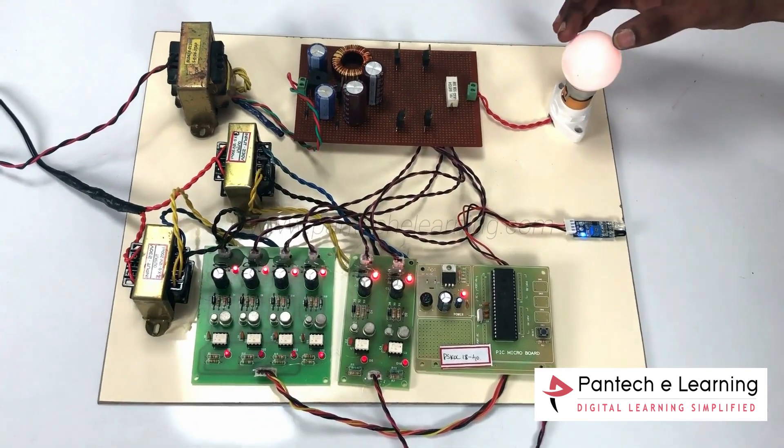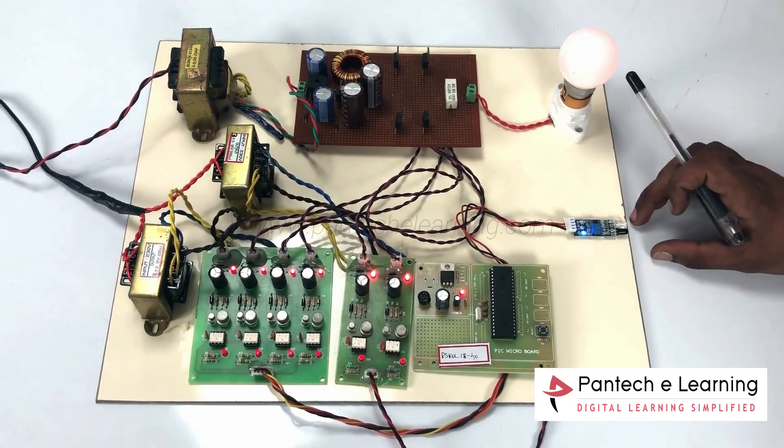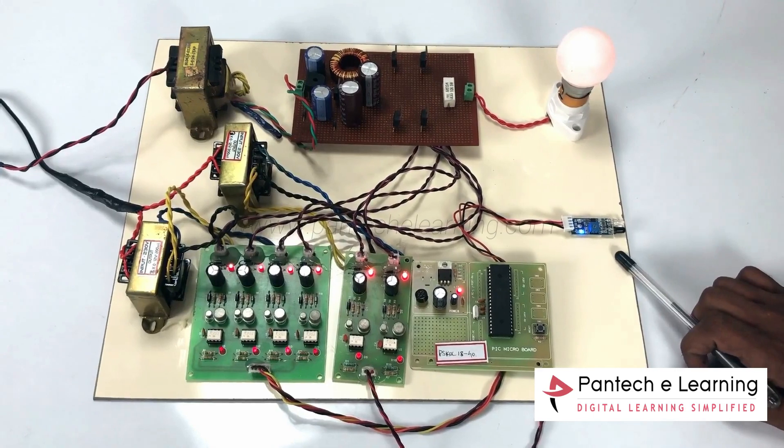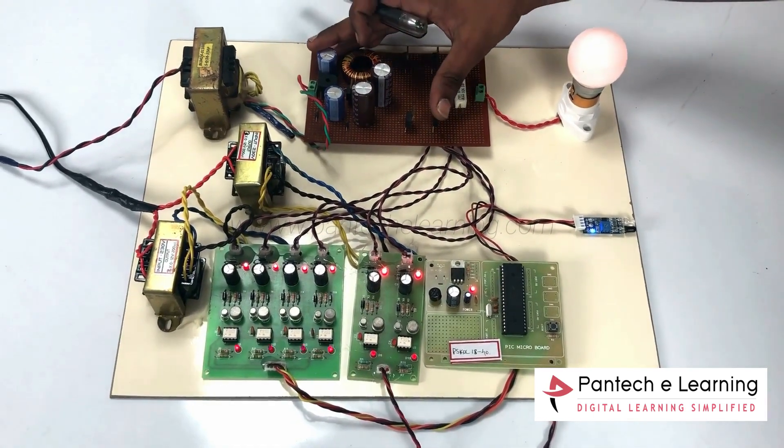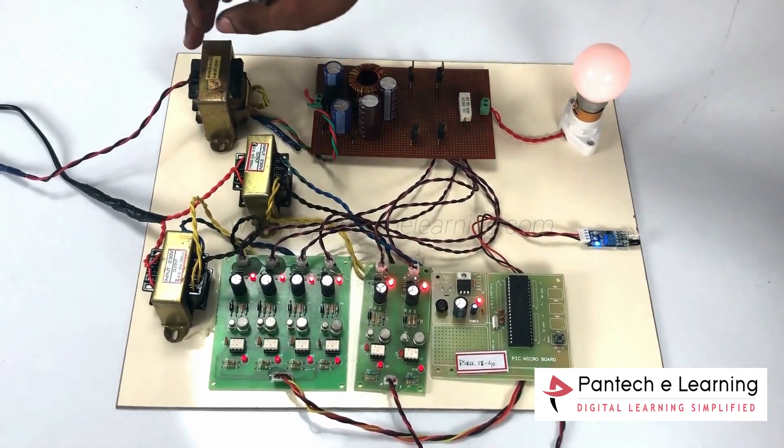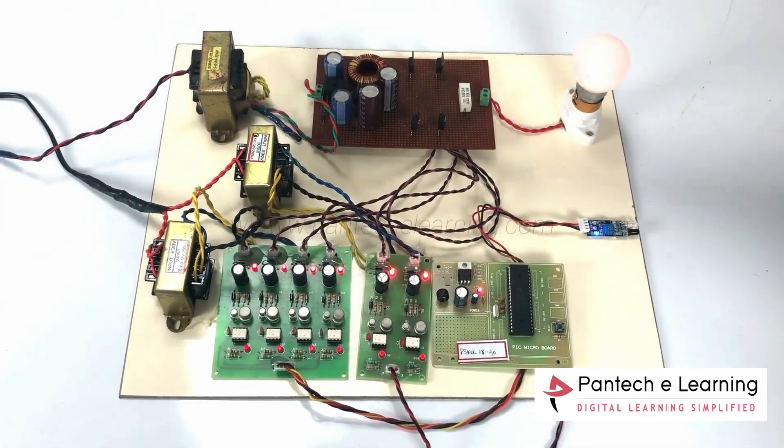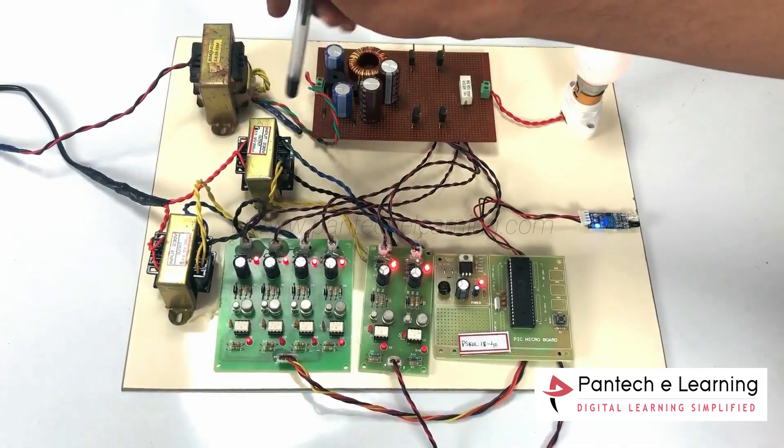We are assuming that this is the streetlight and this is the sensor. Here we are using an IR sensor, and this is the Powertronic circuit. Here is the input for the Powertronic Circuits, and these are the supply transformers.